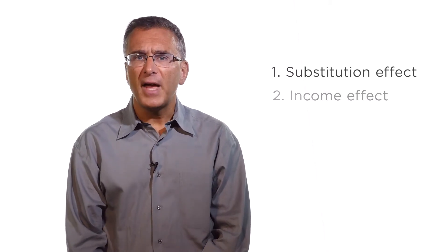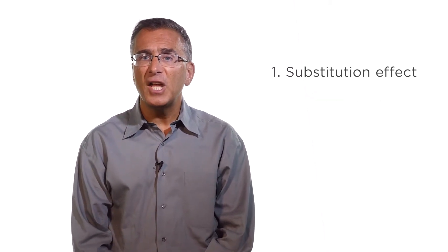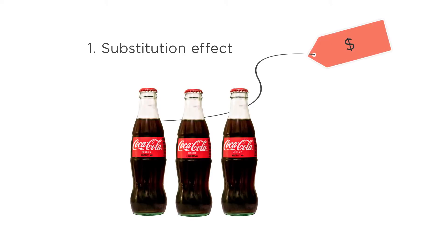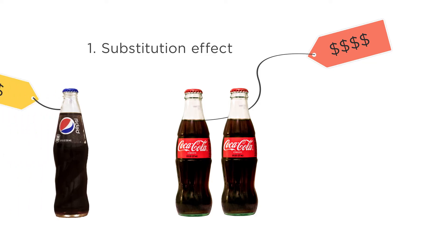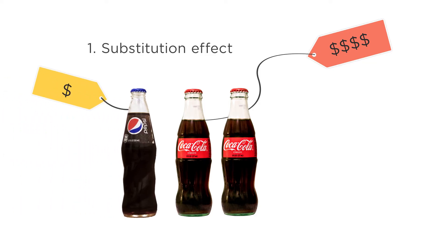The substitution effect is the extent to which a rise in the price of a good will lead to substituting towards other goods, holding all else constant. If the price of Coca-Cola goes up, for example, you'll buy fewer bottles of Coke because you've switched to Pepsi. The substitution effect will be larger the more substitutable the alternative goods are.